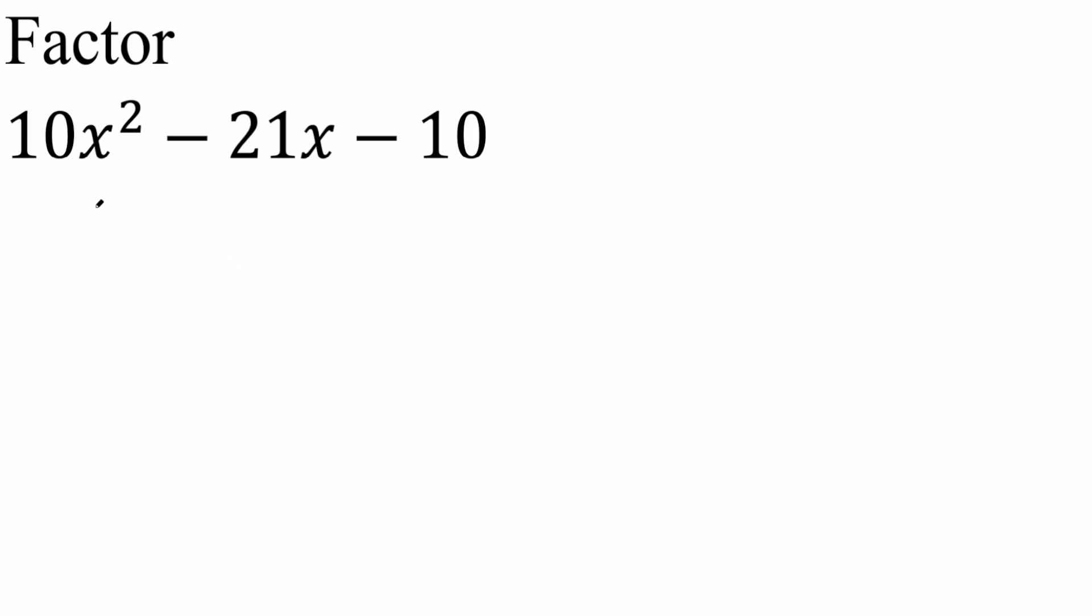Now in this particular problem, I'm going to solve it mentally using the trial and error approach. So here we have 10x squared. There's a couple of ways to get 10x squared: you could get it by x times 10x, or you could also get it by 2x and 5x. This method is the trial and error approach, so let's just try something. Let's just try 2x and 5x.